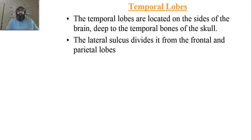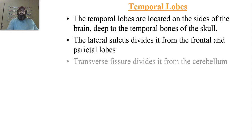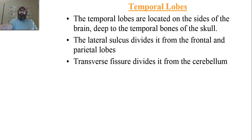The lateral sulcus is one of the dividing lines from the frontal and the parietal lobes. It runs from underneath the frontal lobe to underneath the parietal lobe, extends back and kind of touches the occipital lobe, running across the entire upper edge of the actual temporal lobe. You also have the transverse fissure, which divides the temporal lobe from the cerebellum — on the inferior side of the brain, underneath the temporal lobe but above the cerebellum.